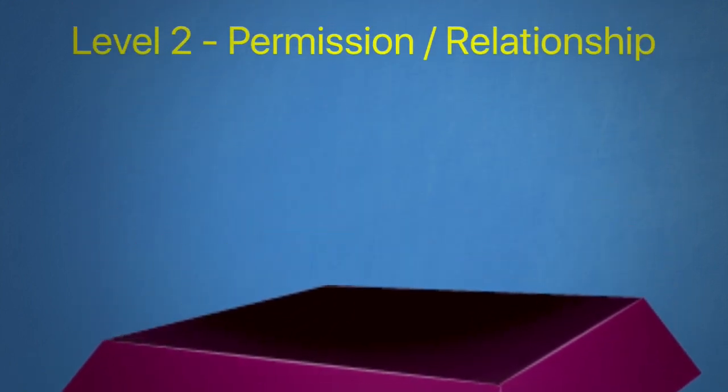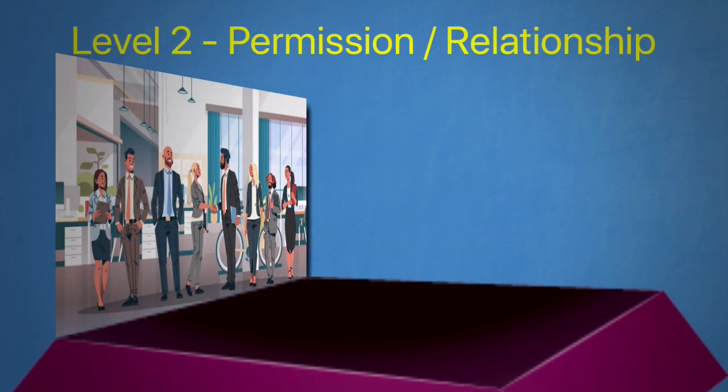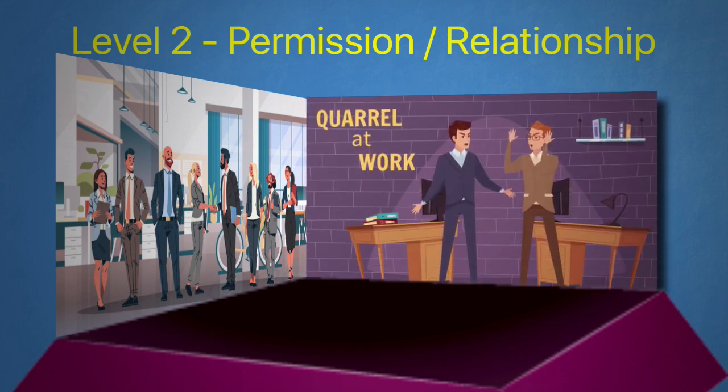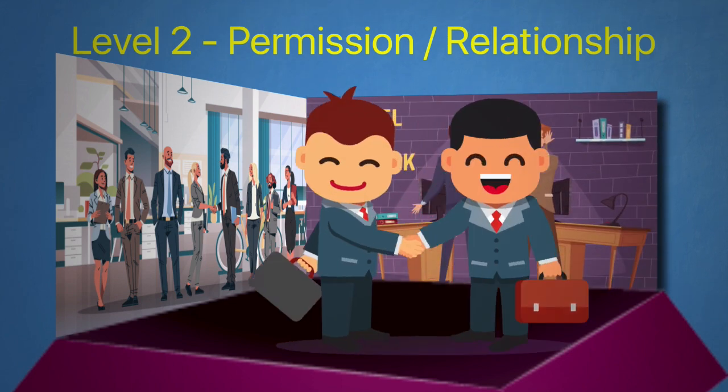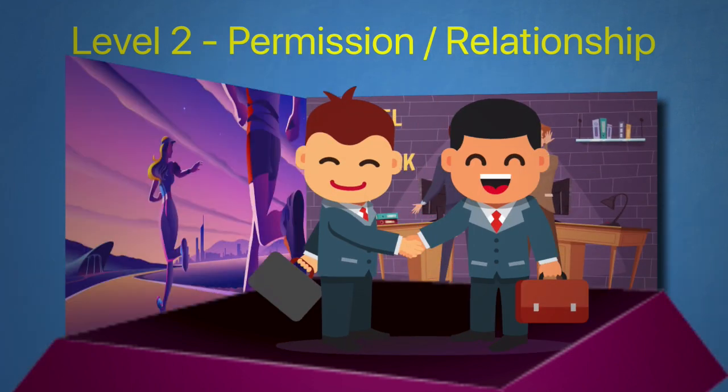Now the second level is permission. This level can be summarized by the word relationship. People follow you not because they have to but because they want to. If people like you, they will go the second mile with you.